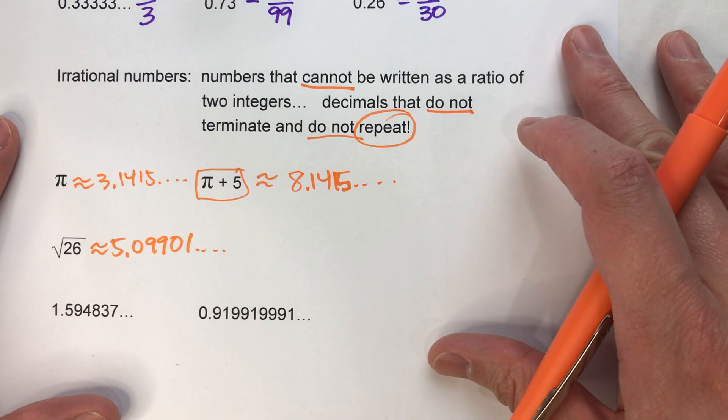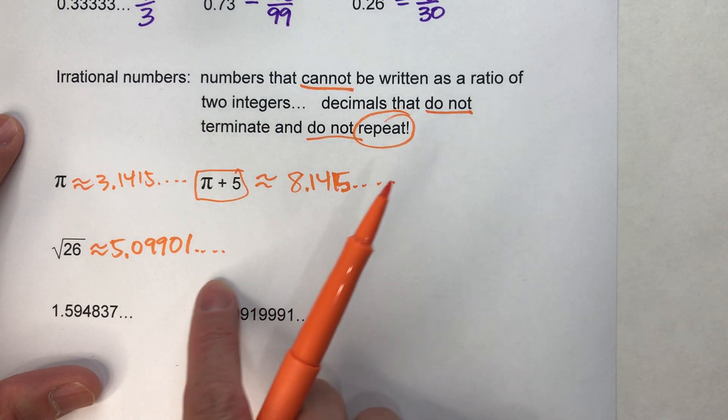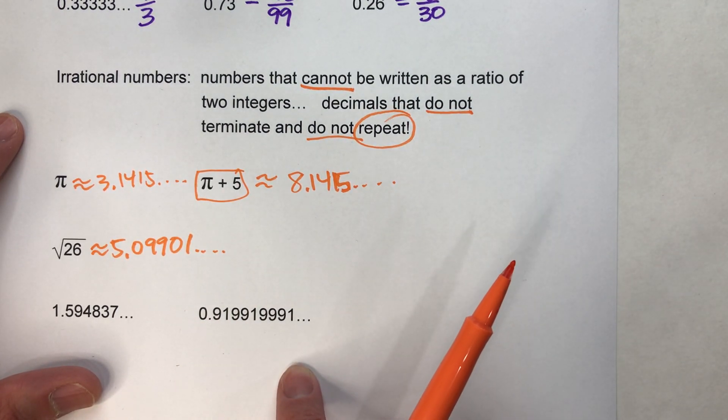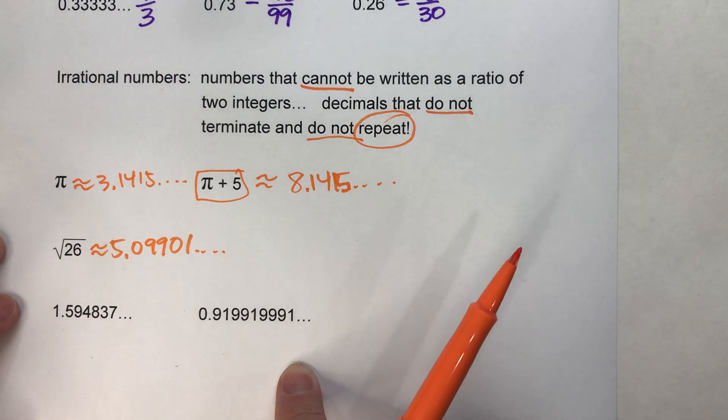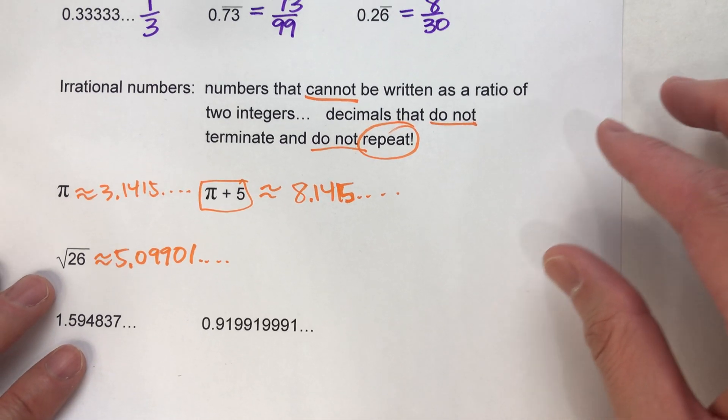So this is still irrational. Don't get fooled by that, because that's a common mistake that a lot of people fall for. They say, 'Oh, there is a pattern, so it must be rational.' No, we can't write a fraction for that.